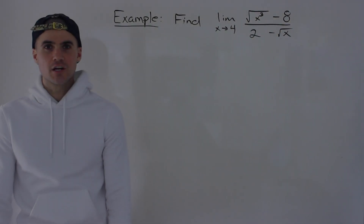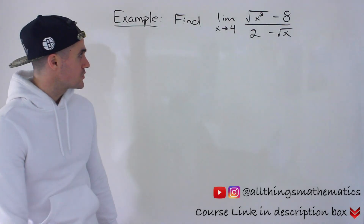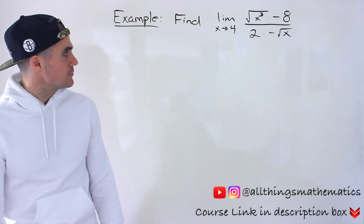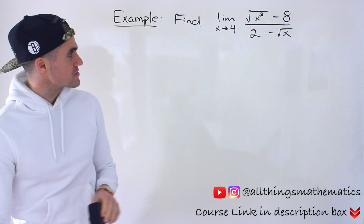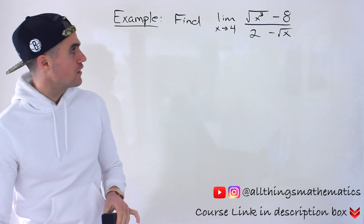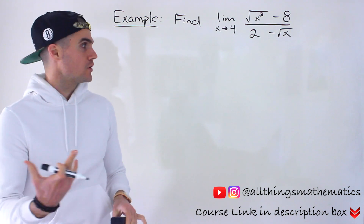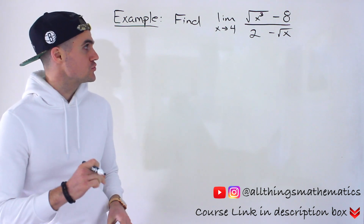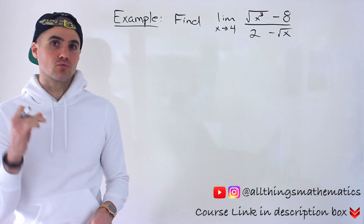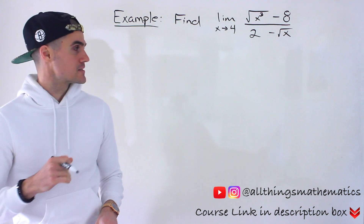What's up, everyone? Patrick here. Welcome back. Moving on to the next limit, we have to find this limit as x approaches 4 of the square root of x to the power of 3 minus 8, over 2 minus root x.